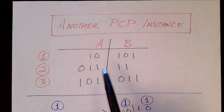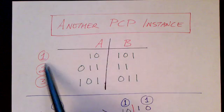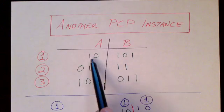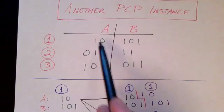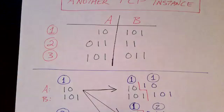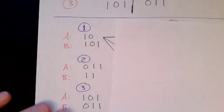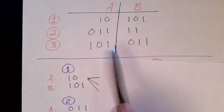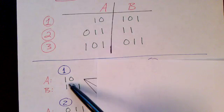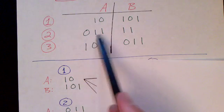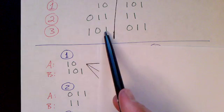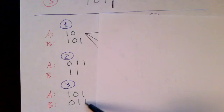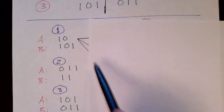Here is another instance of the post correspondence problem. We have three tiles and the tiles are given here with an A side and a B side or a top and a bottom. Let's try to find a solution. The first tile we use can either be tile 1, tile 2, or tile 3. So I am going to look at each of those cases. Tile 1 has 10, 101. Tile 2 has 011 and 11. And tile 3 has 101 on the top and 011 on the bottom.